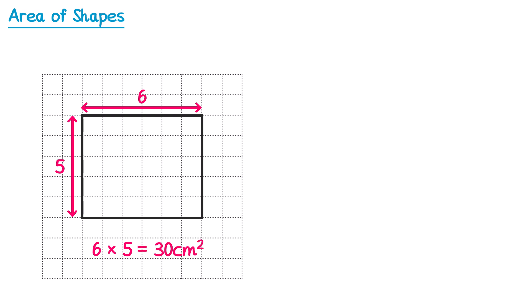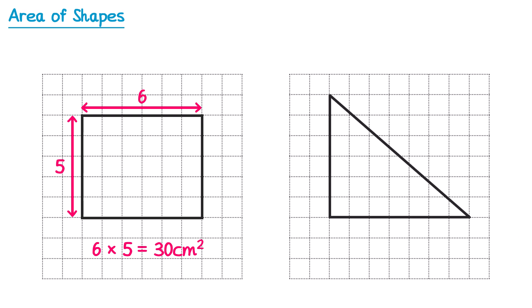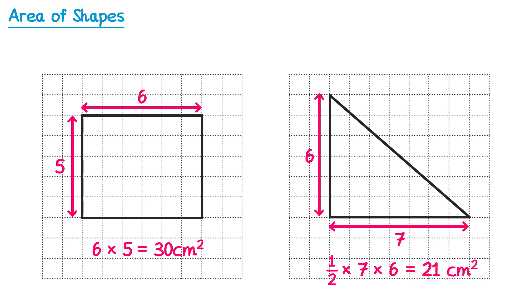It doesn't matter whether you do the calculation approach or counting the squares. However, in this shape here, counting the squares is very difficult because whilst we have some whole squares, we also have lots of part squares, and we can't tell exactly how big each of those is. So for this one we would want to work out the base, which should be 7cm, and the height, which is 6cm. We then use the formula: one half multiplied by the base, multiplied by the perpendicular height. And if you work this out, you'll get 21cm squared.